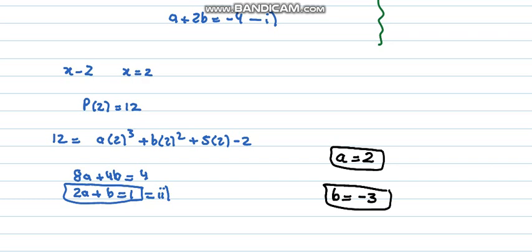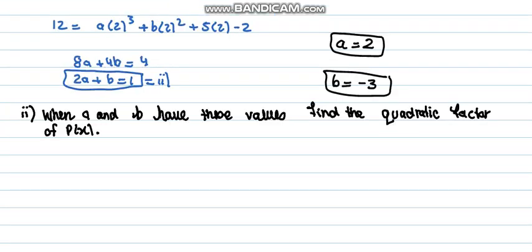So the next part of the same question says that when a and b have these values, find the quadratic factor of p(x). So what we can do is write the expression 2x³ - 3x² + 5x - 2.